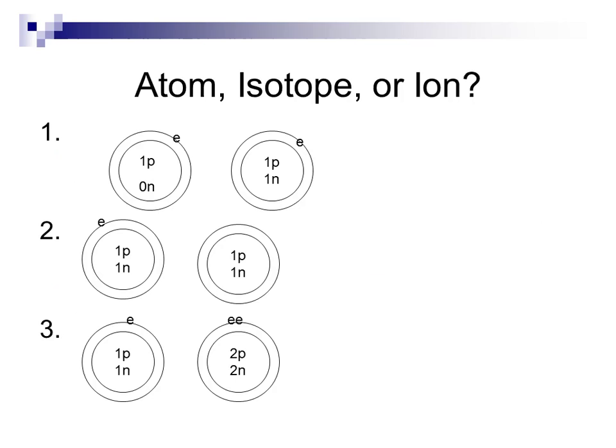So, there is some space on your paper where I want you to copy these pictures, and what we're going to do is identify whether we have a whole separate atom between the two pictures, or if we have an isotope or an ion when we compare the second picture to the first in each of these examples.